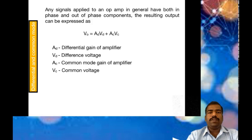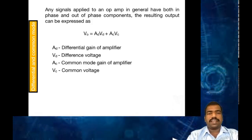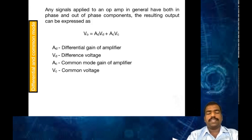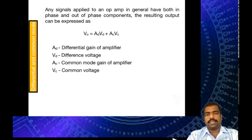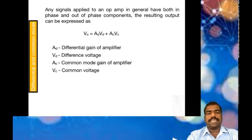In general, the output is a combination of AD*VD plus AC*VC, where AD is the differential gain of the amplifier and AC is the common mode gain of the amplifier. The output must be a combination of differential gain and common mode gain: Voutput = AD*VD + AC*VC.